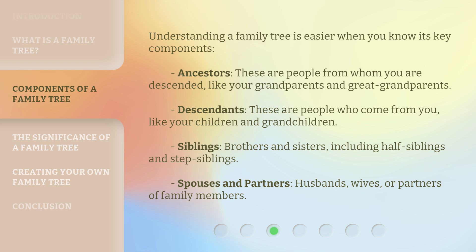Understanding a family tree is easier when you know its key components. Ancestors: these are people from whom you are descended, like your grandparents and great-grandparents. Descendants: these are people who come from you, like your children and grandchildren. Siblings: brothers and sisters, including half-siblings and step-siblings.